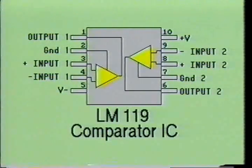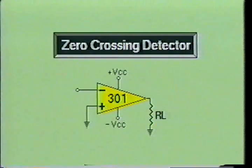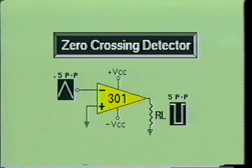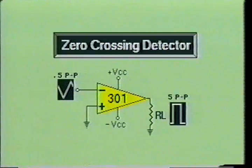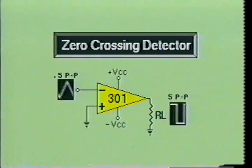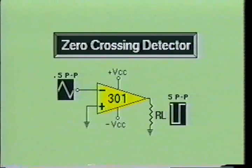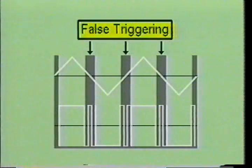Here we see a simple zero-crossing detector using the 301 operational amplifier as a comparator. The input signal is a triangular voltage applied across the inverting input, and the non-inverting input is connected to ground. The output of this circuit is a square wave pulse operating between the positive voltage saturation and the negative voltage saturation points. As the triangular input signal crosses the zero-volt reference line and goes positive, it causes the output to saturate at the negative saturation point. When the signal decreases back to zero and goes negative, it causes the output to saturate at the positive saturation point. In a practical comparator circuit, as the input signal approaches the zero-reference line, the internal noise in the op-amp will cause the circuit to false trigger. This can be eliminated by the use of positive feedback.